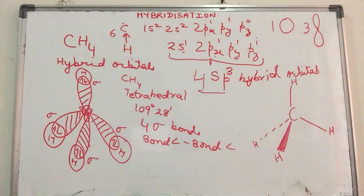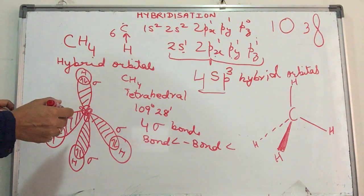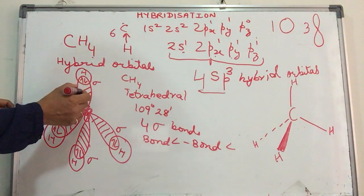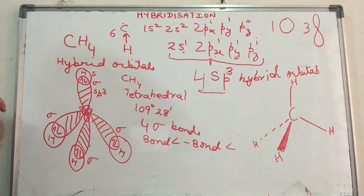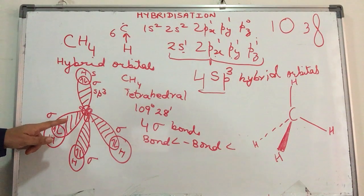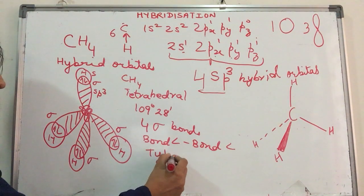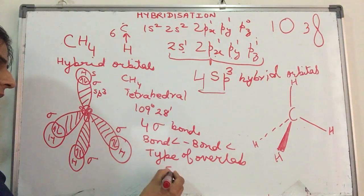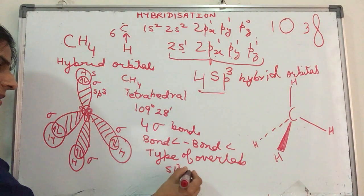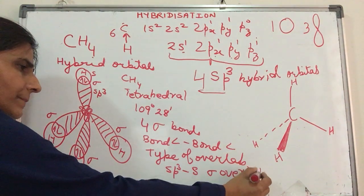This is a two-dimensional representation of a 3D structure and represents a tetrahedral molecule. You can also understand the type of overlap. This is an sp³ hybrid orbital whereas this is the s orbital of hydrogen. Again, sp³ hybrid orbital, s orbital of hydrogen. The type of overlap happening here is an sp³-s sigma overlap.